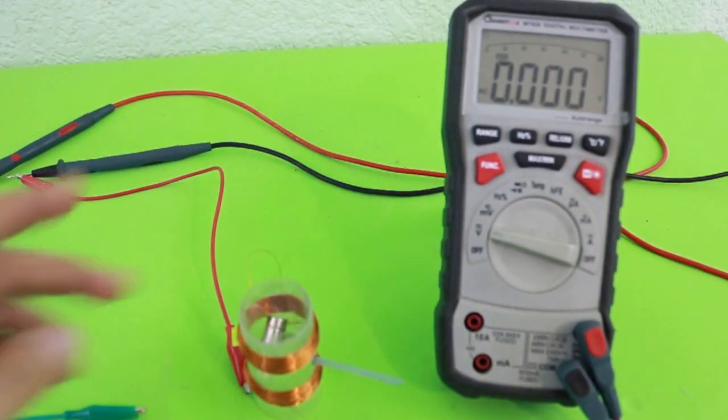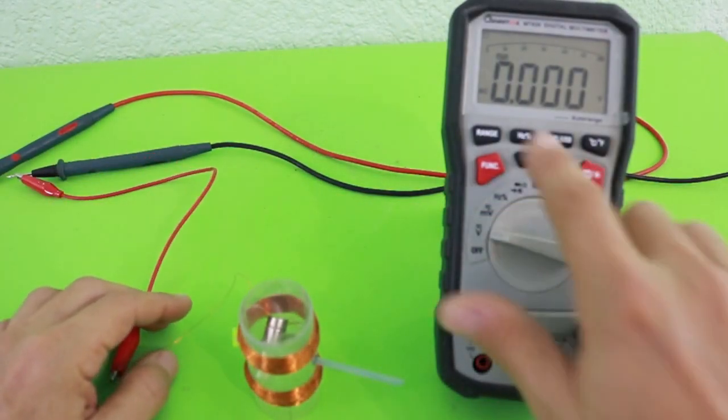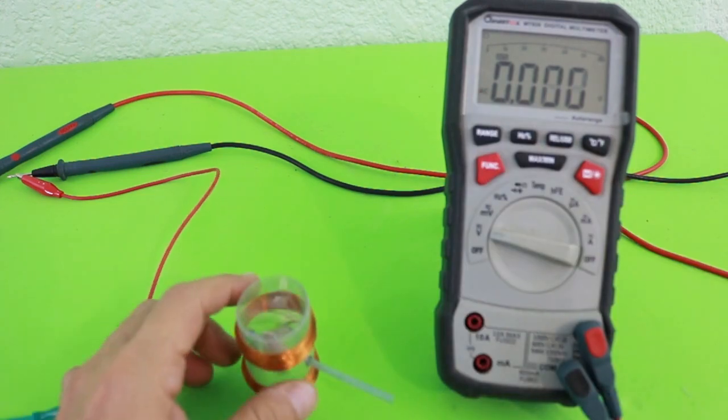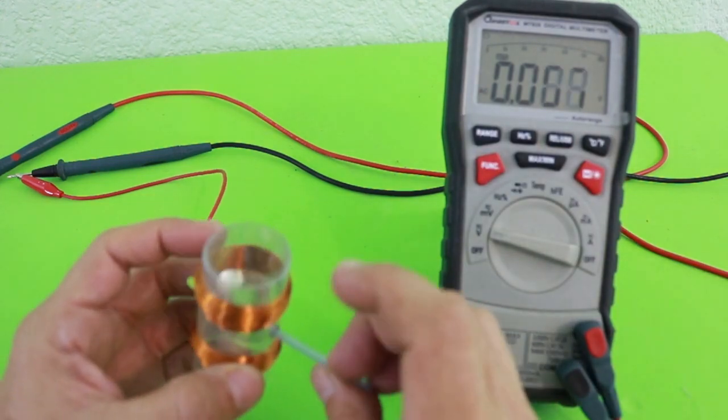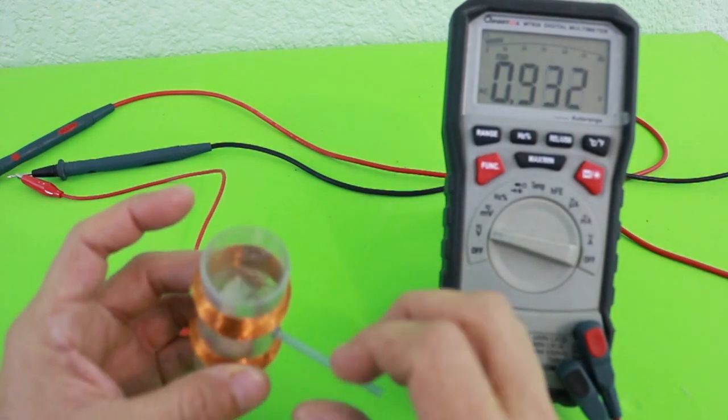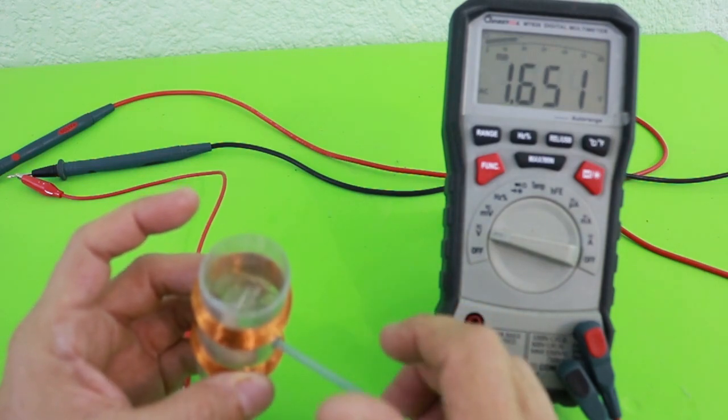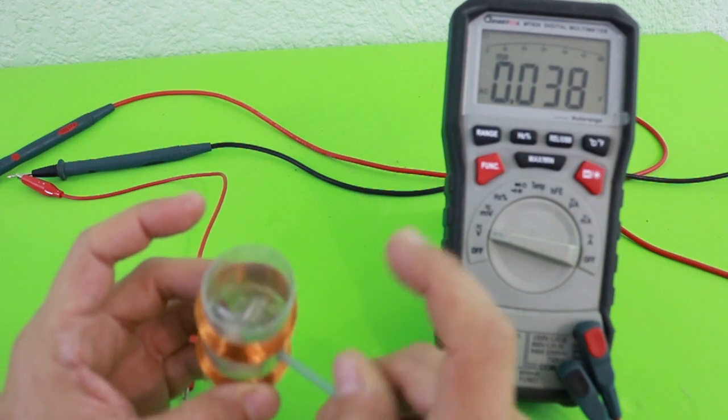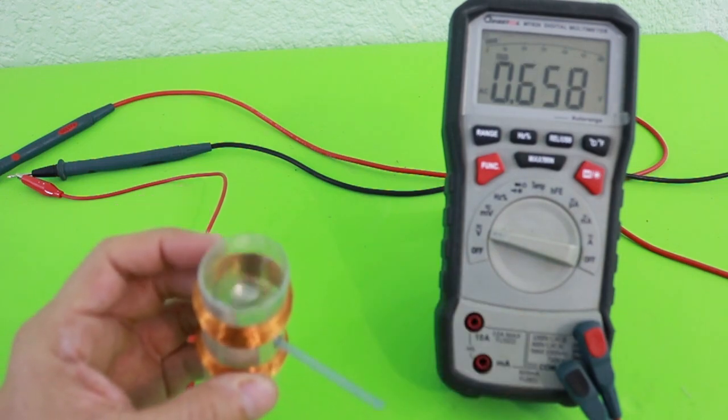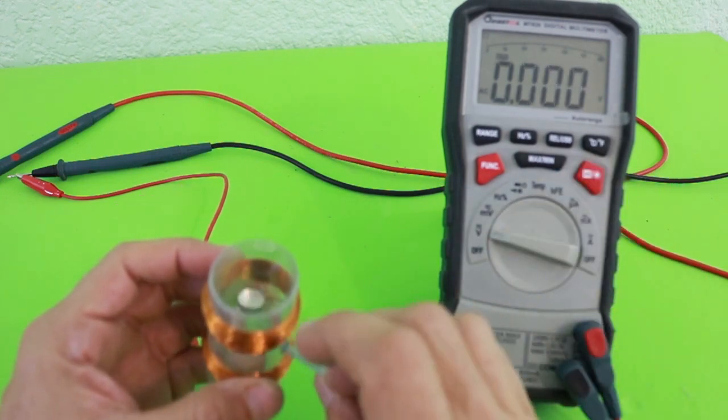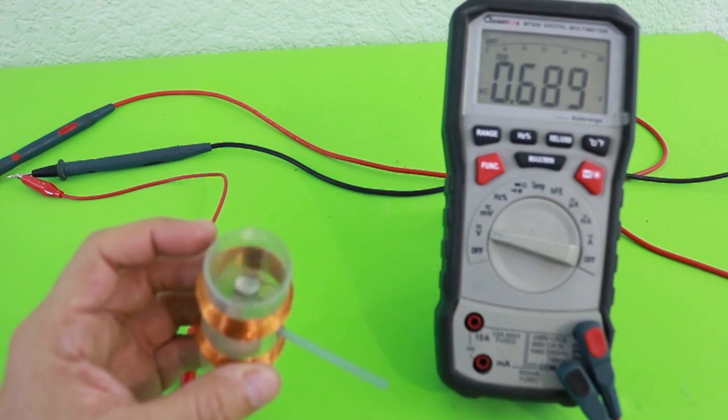Okay, I have the generator connected to the multimeter. It is in AC and let's see we get between 1 and 2 volts but remember that the multimeter is calibrated to read 60 hertz AC.